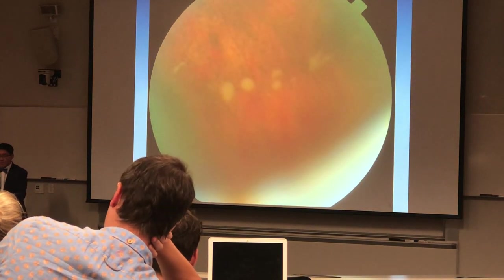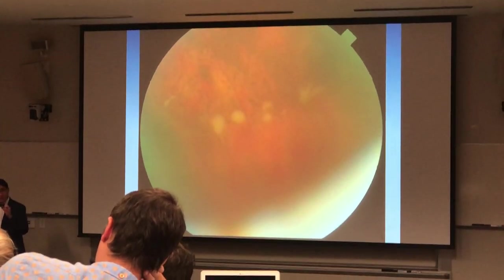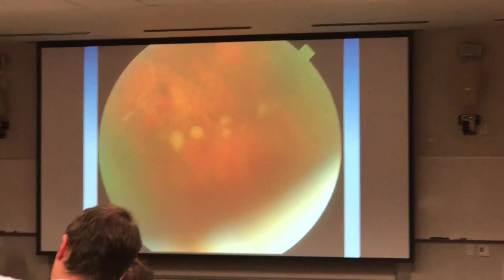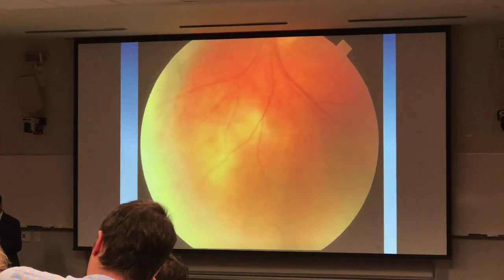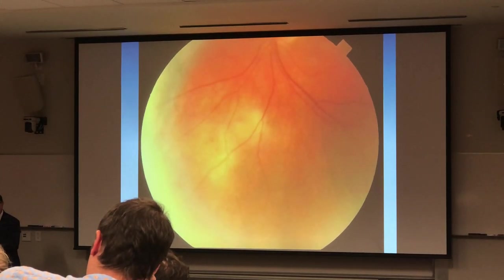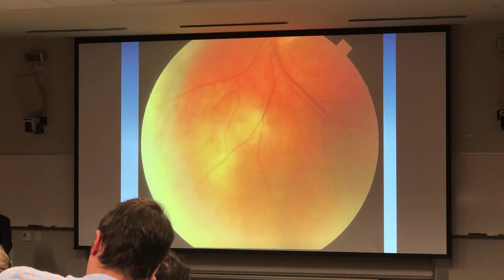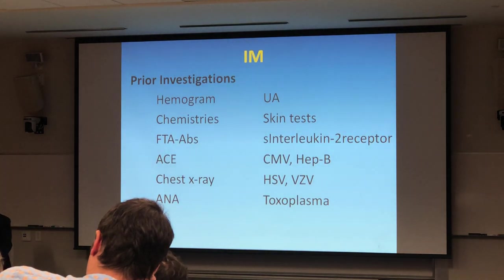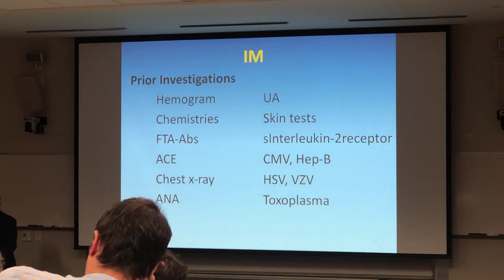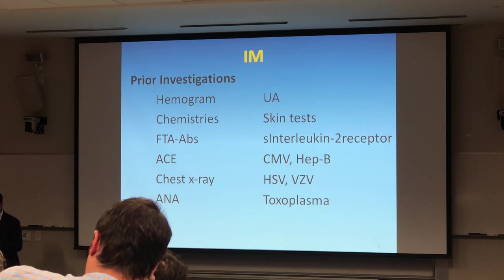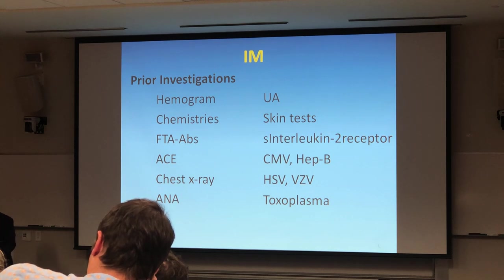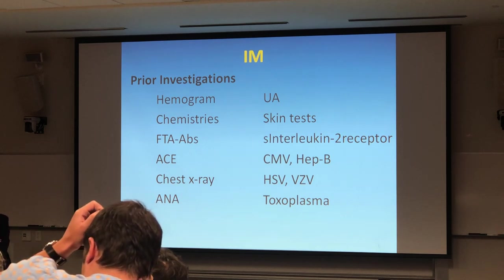This is the photograph. You can see whitish cells floating around. You also see yellow chorioretinal lesions in the posterior segment in the periphery. Prior investigation when they came to us included complete blood count, chemistry panel, syphilis testing, chest X-ray, urinalysis, skin test, and interleukin-2 receptor — the soluble form — we looked for that.